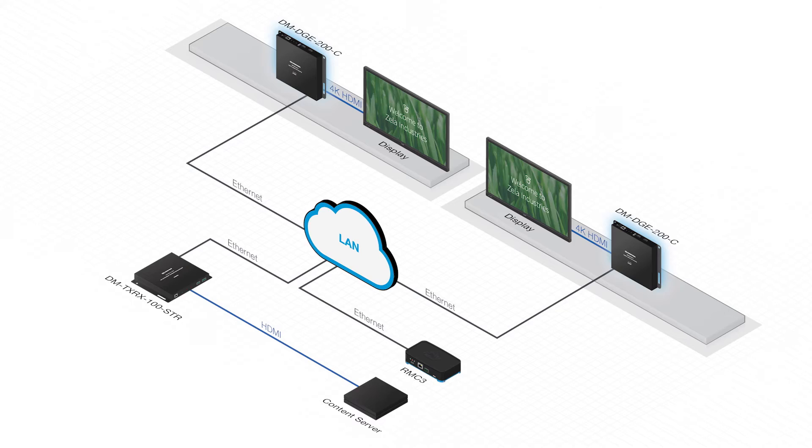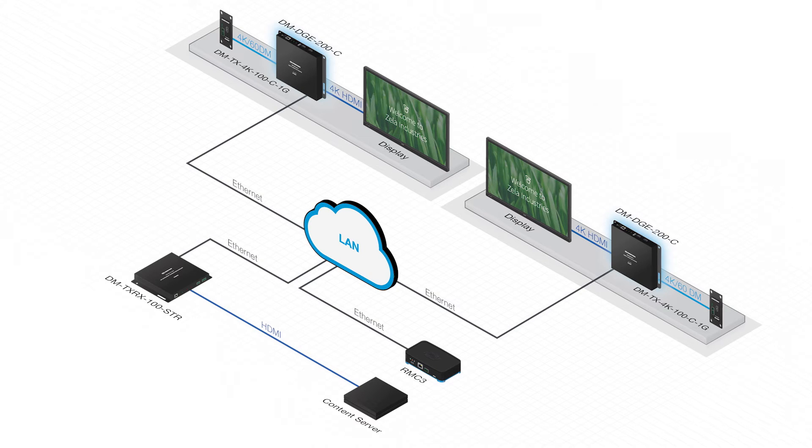Just install a DMDGE wherever you want digital signage, and you instantly have content display anywhere on the network. And what's really exciting is that because the DGE also has an HDMI input, you could install a pass-through wall plate so you can easily connect a laptop for an impromptu meeting. Dual purpose for an otherwise dumb signage display.